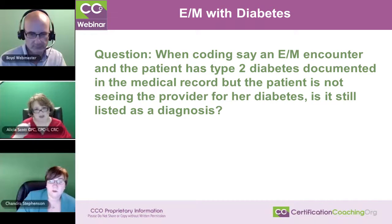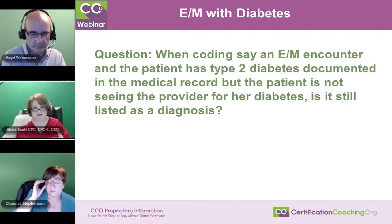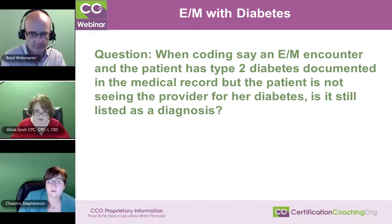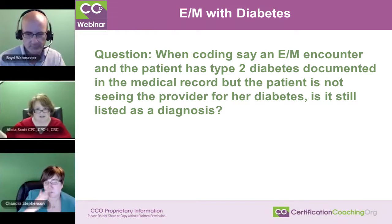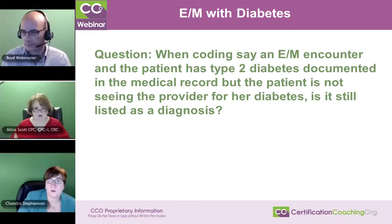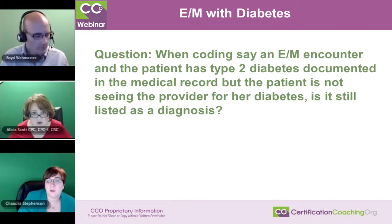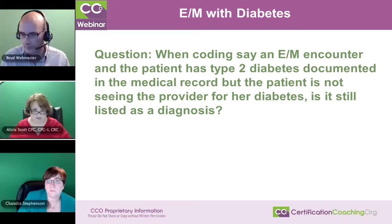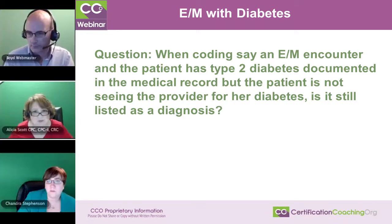Don't think of it only as coding for the provider on an individual encounter — yes, you can list it, that's the answer to the question — but think of it from the risk adjustment aspect. Every time that patient comes in and they have a chronic condition, it needs to be listed. If the person comes in because they stubbed their toe and they're diabetic, the doctor mentions the diabetes because of healing and disease processes, but the person also has COPD.